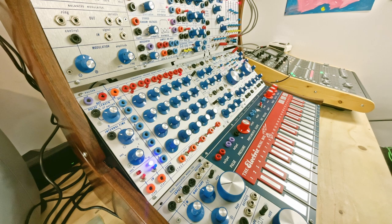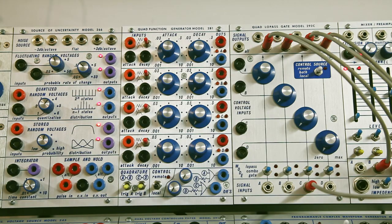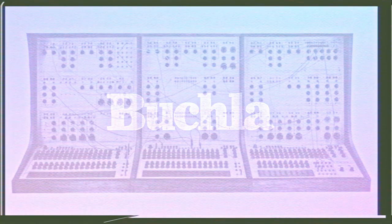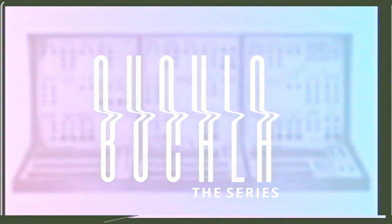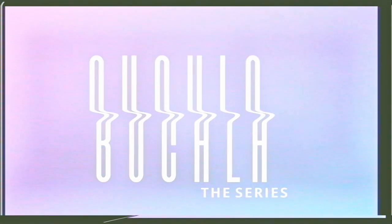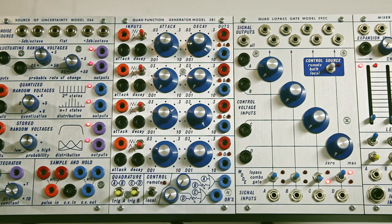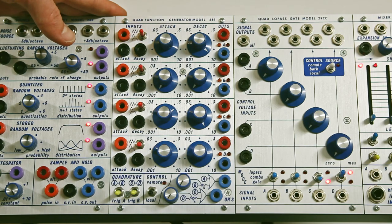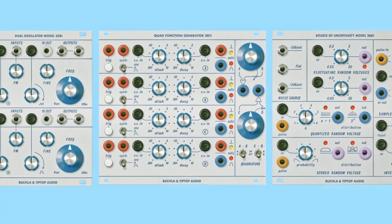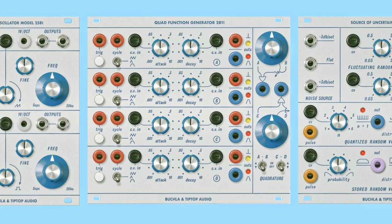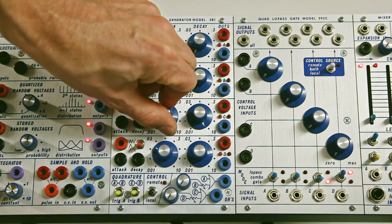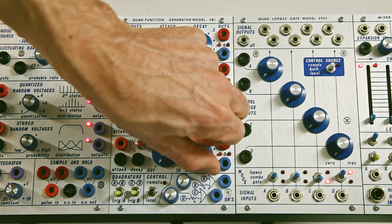Welcome back to the Bukla series. Today we will have a look at the Quad Function Generator model 281. I was asked to make a video about the 281 because recently TipTop Audio released the Eurorack version of this module.